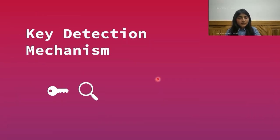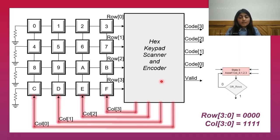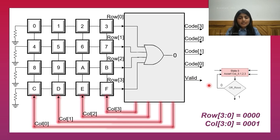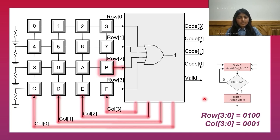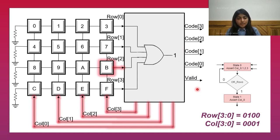Let us proceed to understand the key detection mechanism. First comes state 0 of the machine, in which all the column lines have been asserted. The machine stays in this state as long as no key is pressed. As soon as a key is pressed, the OR of the row lines becomes 1, indicating that a key has been pressed. Now the task of the machine is to identify which key has been pressed.